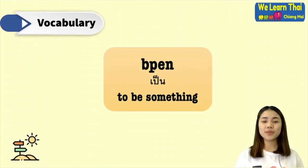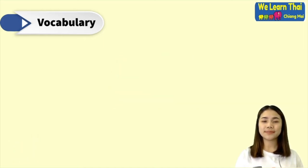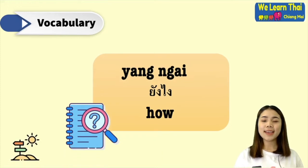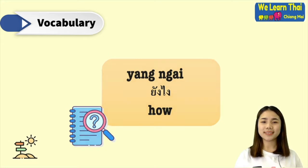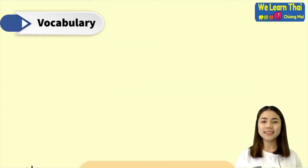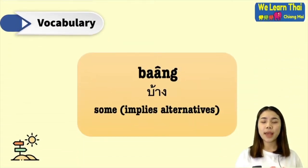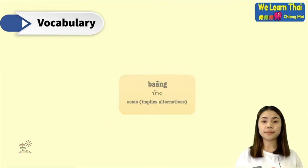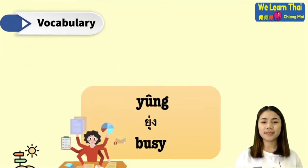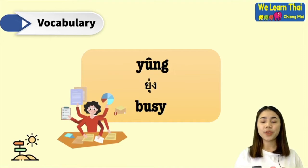The first vocabulary word is 'been,' meaning 'to be something.' Next is 'young i,' which means 'how.' After that is 'bang,' which means 'some.' And the next one is 'busy.'